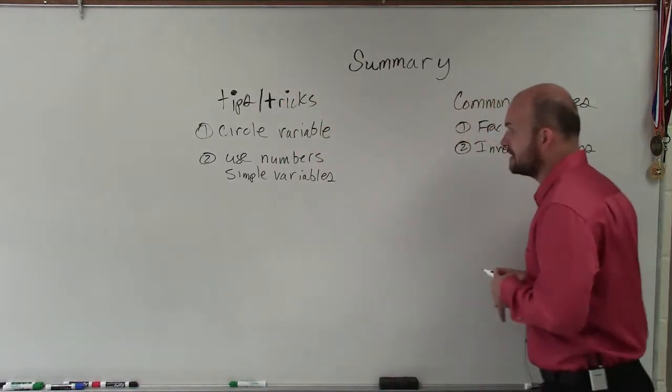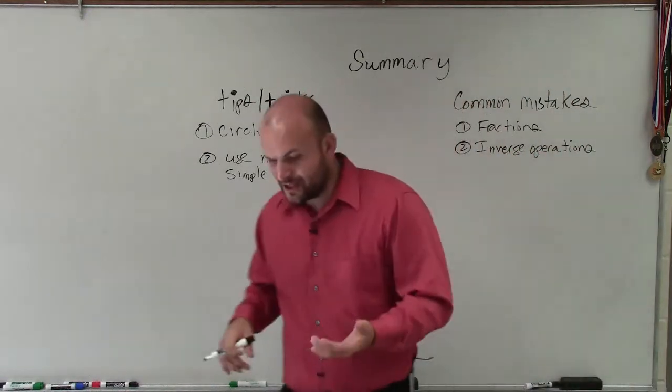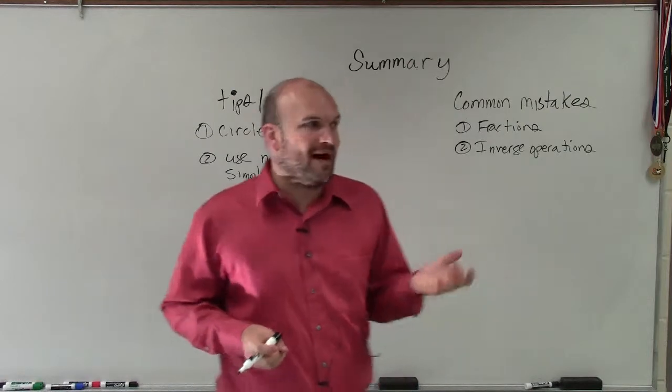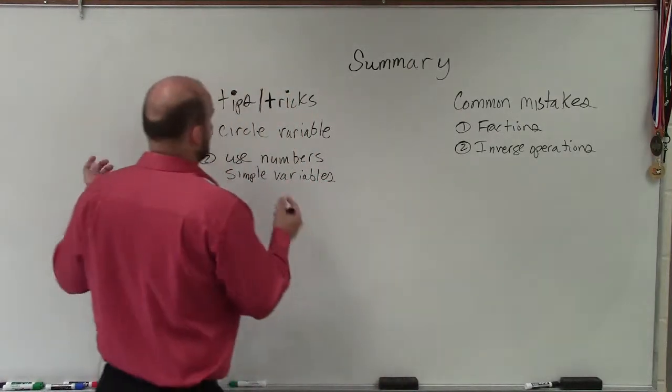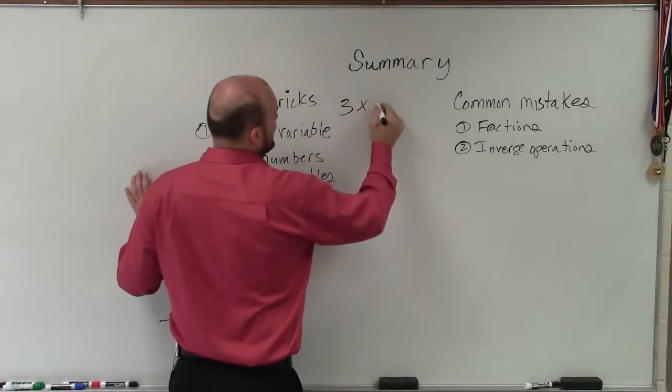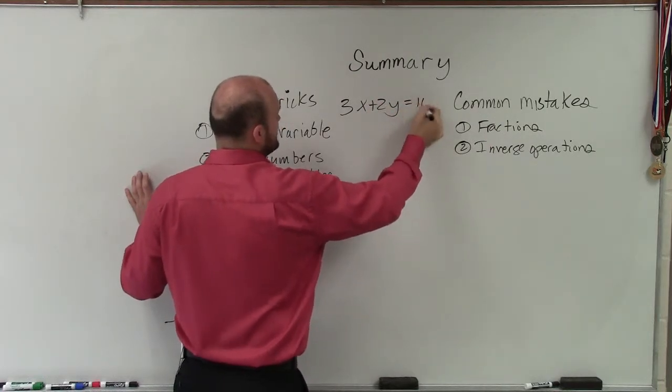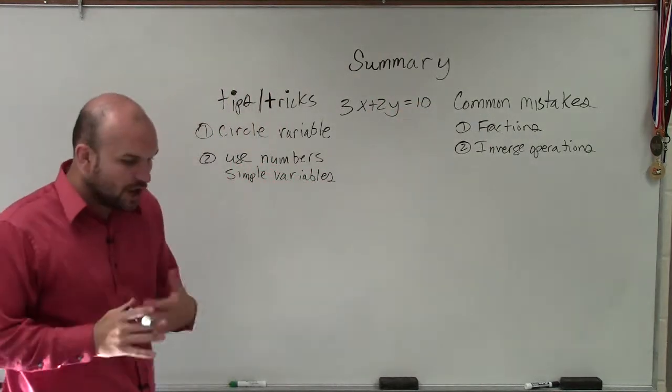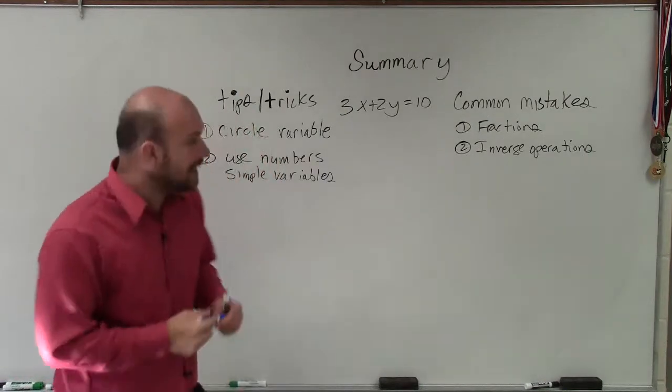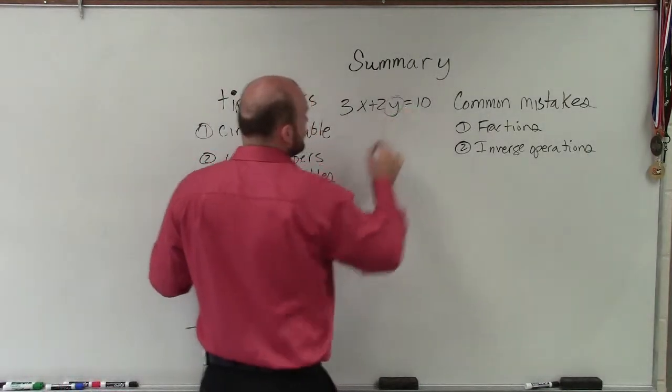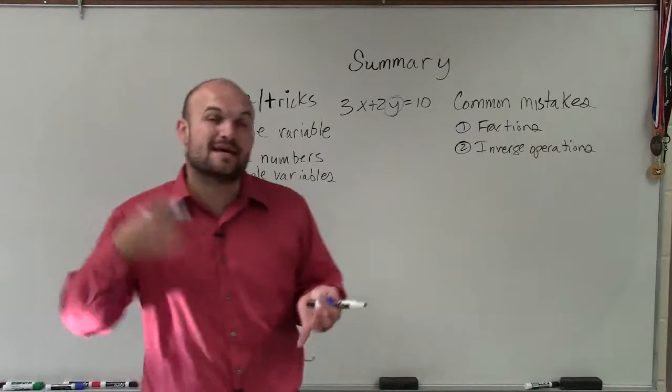So some tips and tricks that I found: one, to circle the variable. A lot of times, once you get the variable positive and by itself, what I like to do, if I had 3x + 2y = 10, and when you want to solve for this, circle the y, right? Circle it. And then what I call that is pinning the variable.